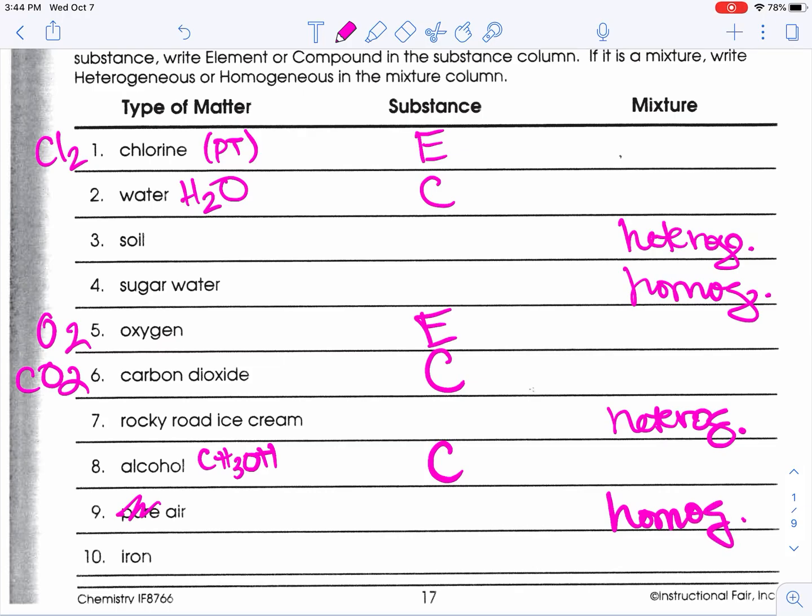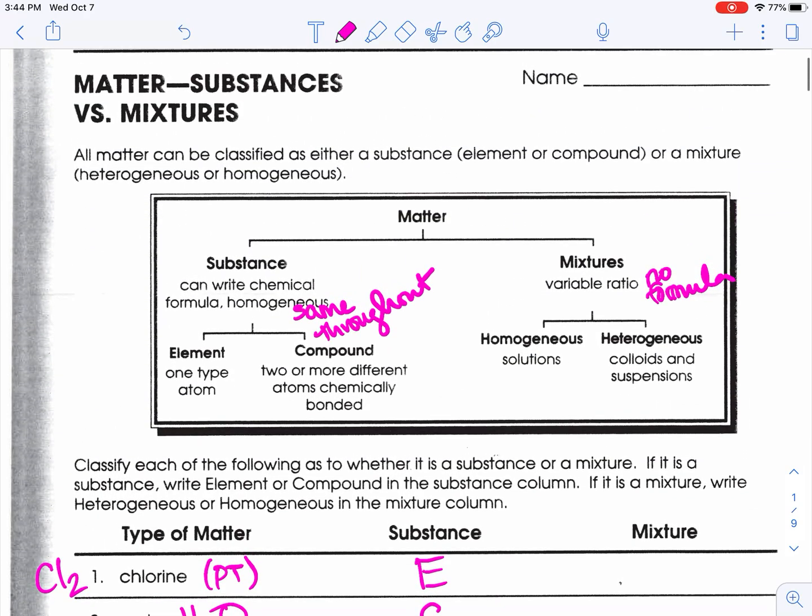Finally, iron has a formula. It is an element, which makes it a pure substance. Maybe number eight was tricky, but I think the rest should be okay. If you have questions, please reach out. Thank you.